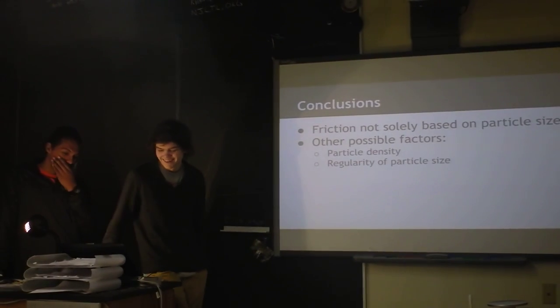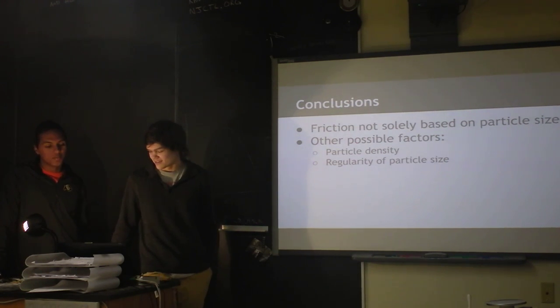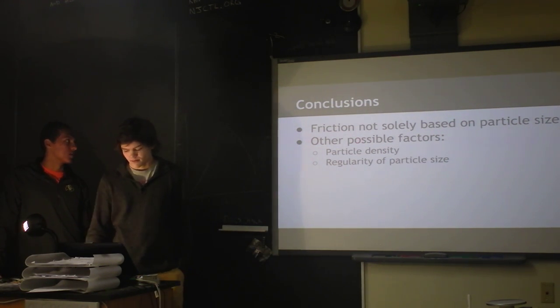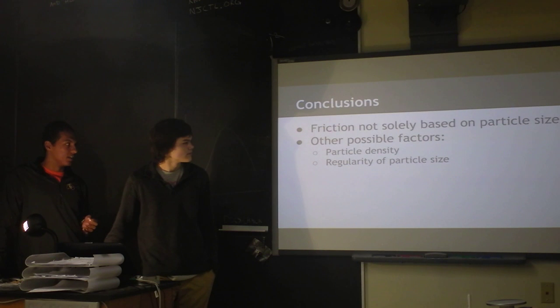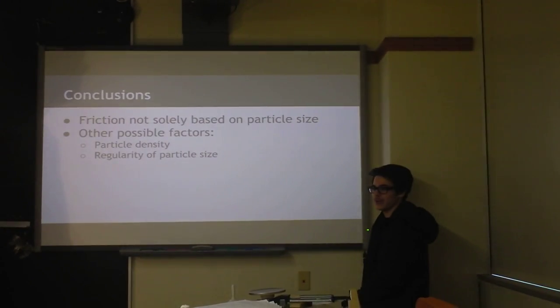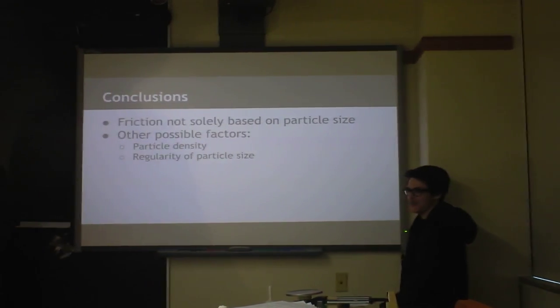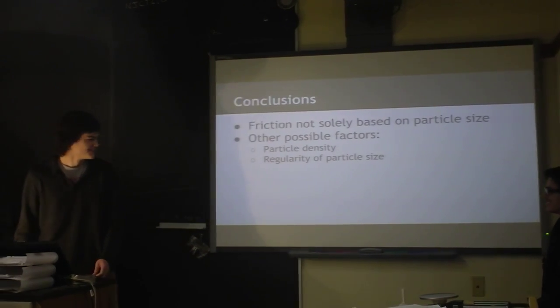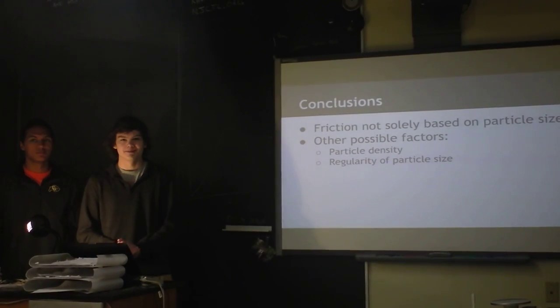So basically our conclusion is that friction isn't just based on particle size. What we realized, especially with that coefficient graph, is that the particle density plays a big factor, bigger probably, and the regularity of particle size. If we had more time and more drive to do more work, we probably could have tested more things and got a better understanding of this, but we're lazy and we didn't do it. And it's also really hard to measure the density of particles when they're so small—Luke's just counting all of them.